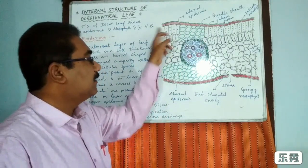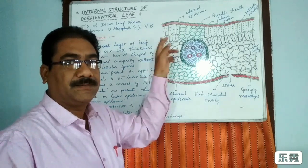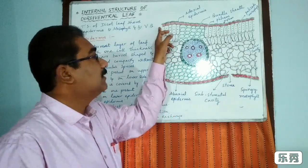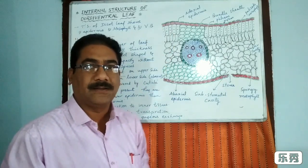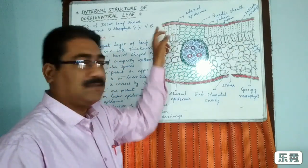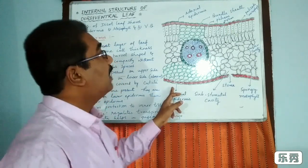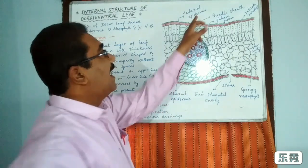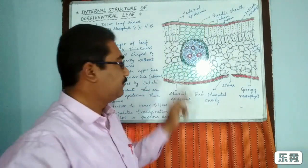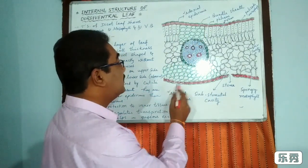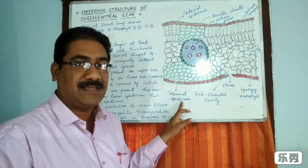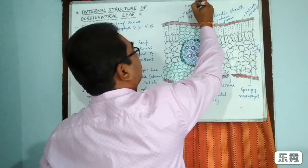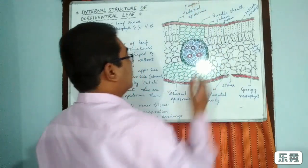The epidermis is present on both sides — the upper side and the lower side. The epidermis on the upper side is called upper epidermis, and the lower side is called lower epidermis. The upper epidermis is also called adaxial epidermis.